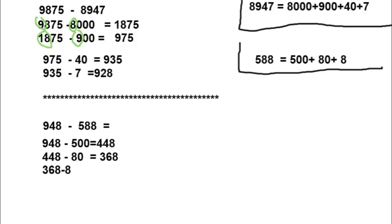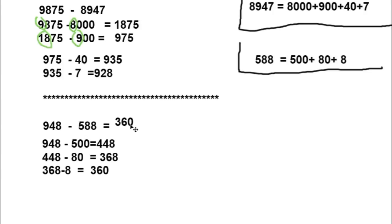588 is equal to 360. So the answer of 948 minus 588 is 360.